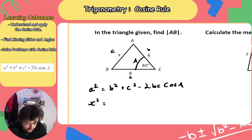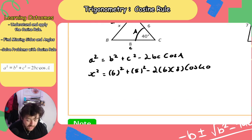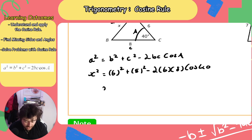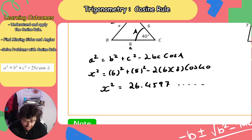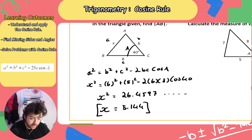So X squared is equal to 6 squared plus 8 squared minus 2 times 6 times 8 cosine 40. So if you put the right-hand side in your calculator, we're doing it live — 2 times 6 times 8 times cos 40. X squared is equal to 26.4597. Take the square root of both sides and we get X is equal to 5.144. So there you go — X is equal to 5.144, and that's how we use the cosine rule there.